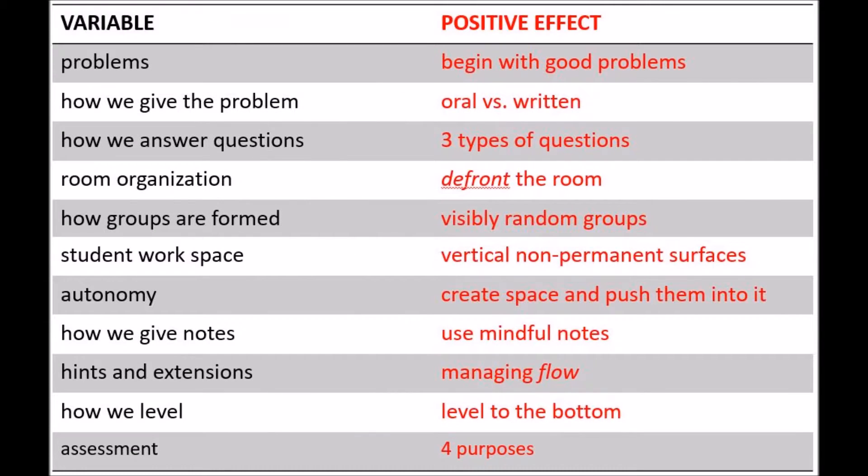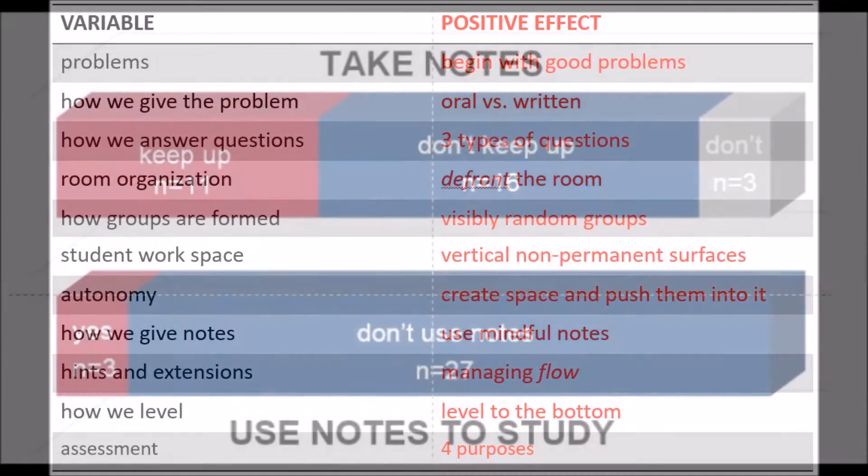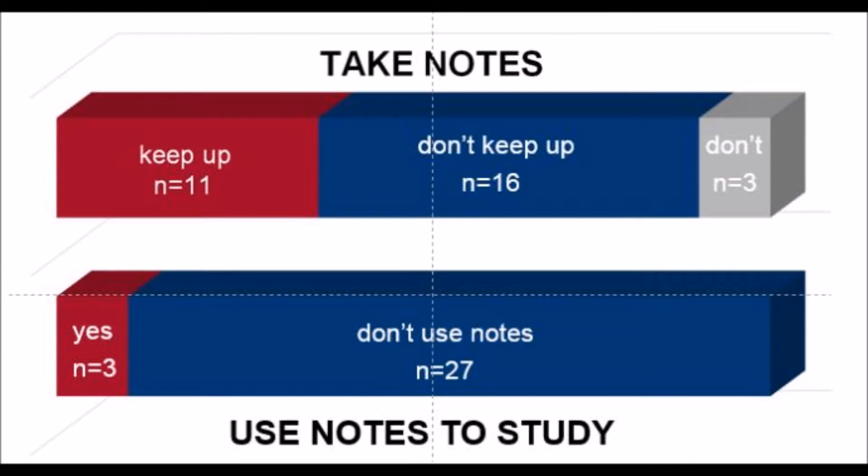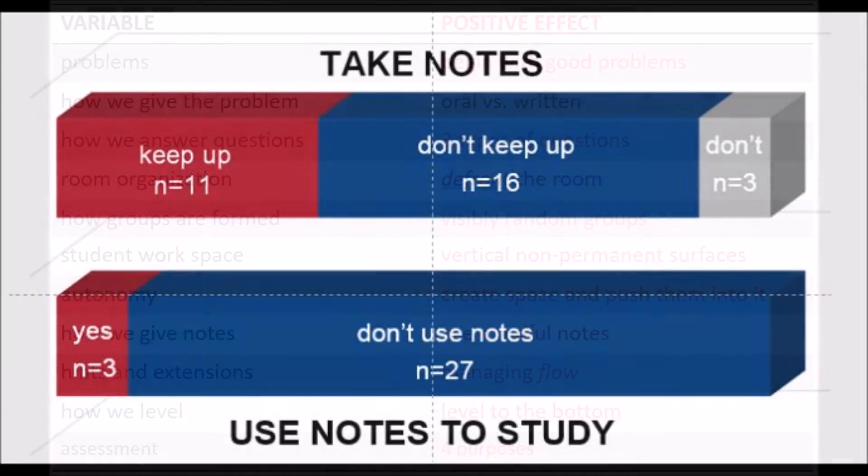How we give notes. The first thing we tried was not to do notes at all, and it actually worked incredibly well. The research showed that about 50% of students are actually actively engaged while they're writing notes. But we never found a single class where more than five students would use their notes after they had written them. So we stopped doing notes. And it actually worked really well, except for those three students who sort of panicked.